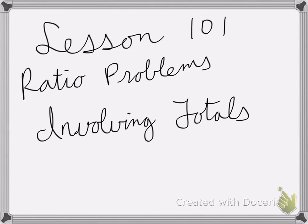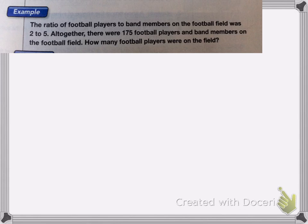Alright, so lesson 101 is on ratio problems involving totals. So here we have the problem, the ratio of football players to band members on the football field was 2 to 5. Altogether, there were 175 football players and band members on the football field. How many football players were on the field?